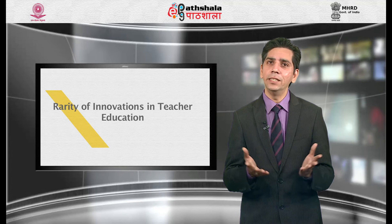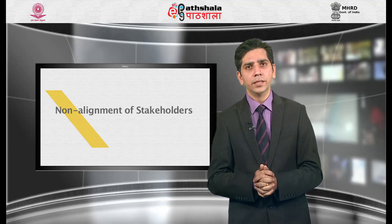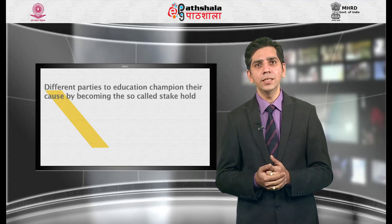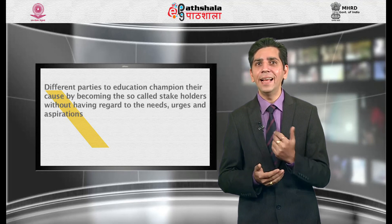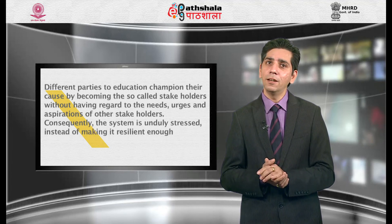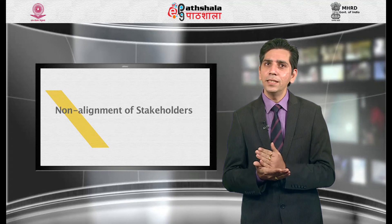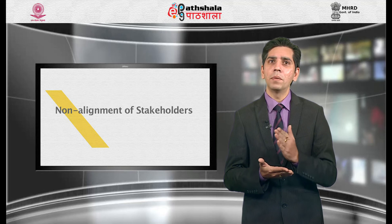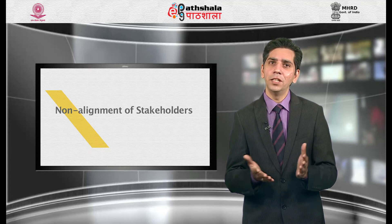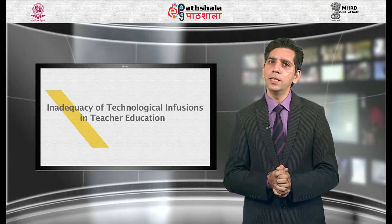Society and its institutions must have the capacity to tolerate genuine mistakes committed inadvertently during the course of innovation. The next issue is the non-alignment of stakeholders. Different parties to education champion their cause of becoming so-called stakeholders without regard to the needs, urges and aspirations of other stakeholders. Consequently the system is unduly stressed instead of being made resilient enough to deliver man-making education. State indifference, judicial activism, privatization and commercialization, public hope and failure, and disrespect for education are fully evident.